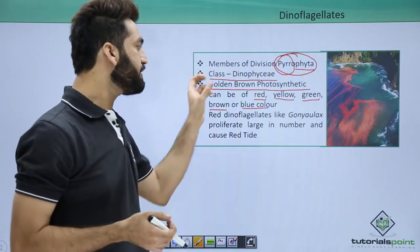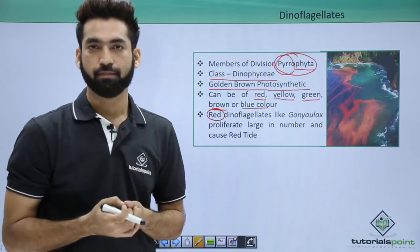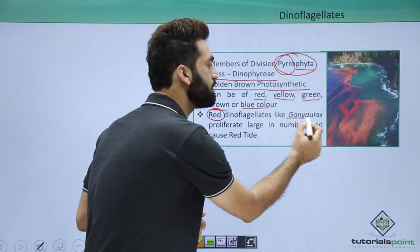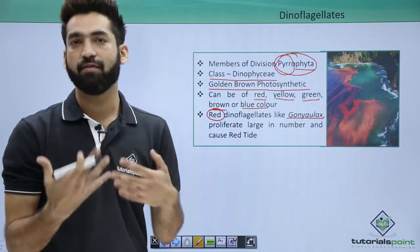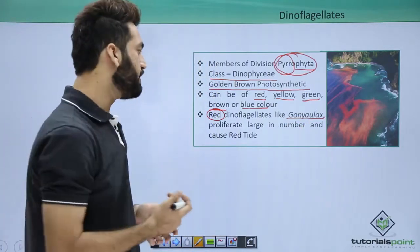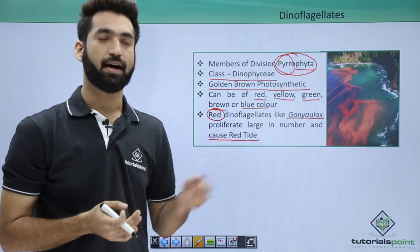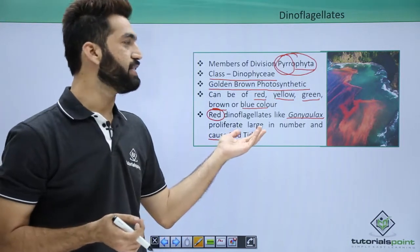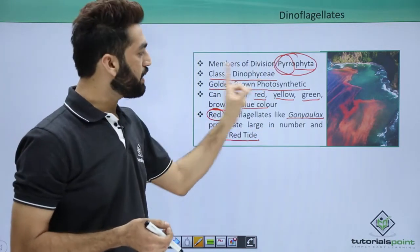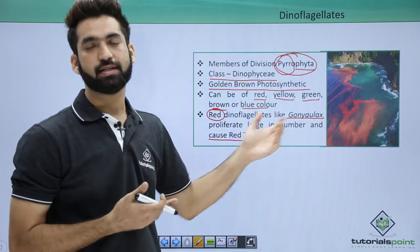Based on color, the red dinoflagellates multiply very fast. One example of red dinoflagellates is Gonyaulax. When Gonyaulax multiplies very fast, it causes red tides. The red tides in the sea are caused by red dinoflagellates, and the name to remember is Gonyaulax.